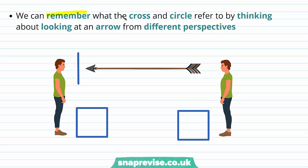An easy way to remember what the crosses and circles refer to is by thinking about looking at an arrow from different perspectives. The person looking at the arrowhead sees a circle because the arrow is pointing towards them, whereas the person looking at the tail sees a cross produced by the feathers.